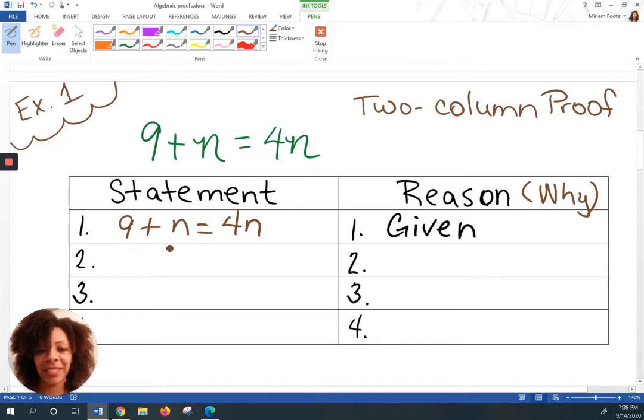What would I do next? Everyone may think differently. It does not matter as long as you're justifying your steps. What I would do is subtract N from both sides, which leaves me with 9 is equal to 3N. So I said I subtract it. So that means I'm going to use the subtraction property of equality. I abbreviate a lot, so subtraction property of equality. What is the next thing I'm going to do? Personally, I'm going to divide both sides by 3. So when I divide both sides by 3, I have 3 is equal to N. What did I say that I was going to do? Division property of equality.